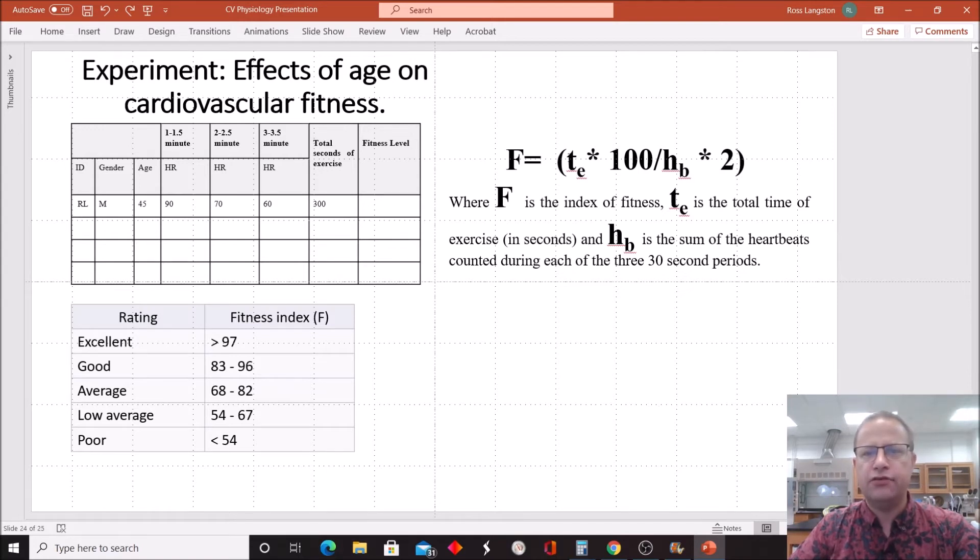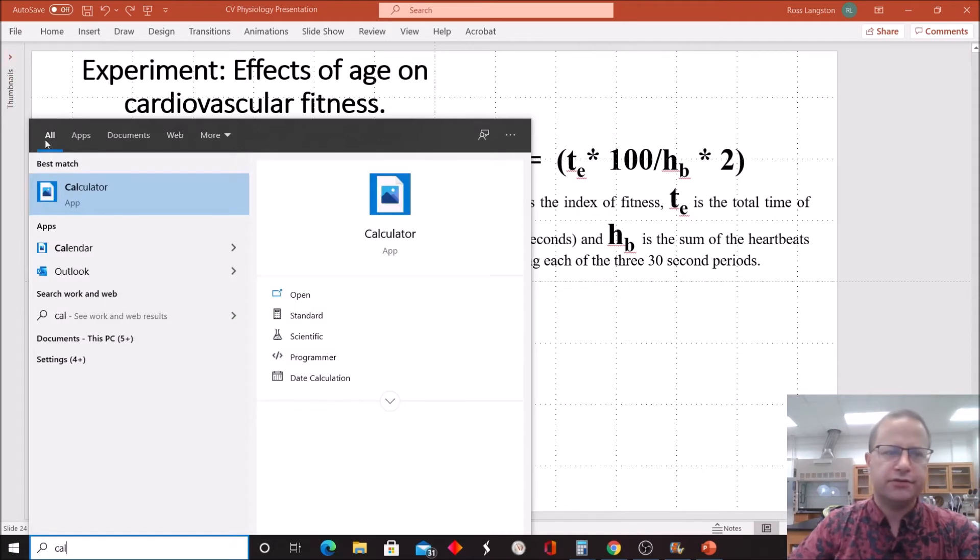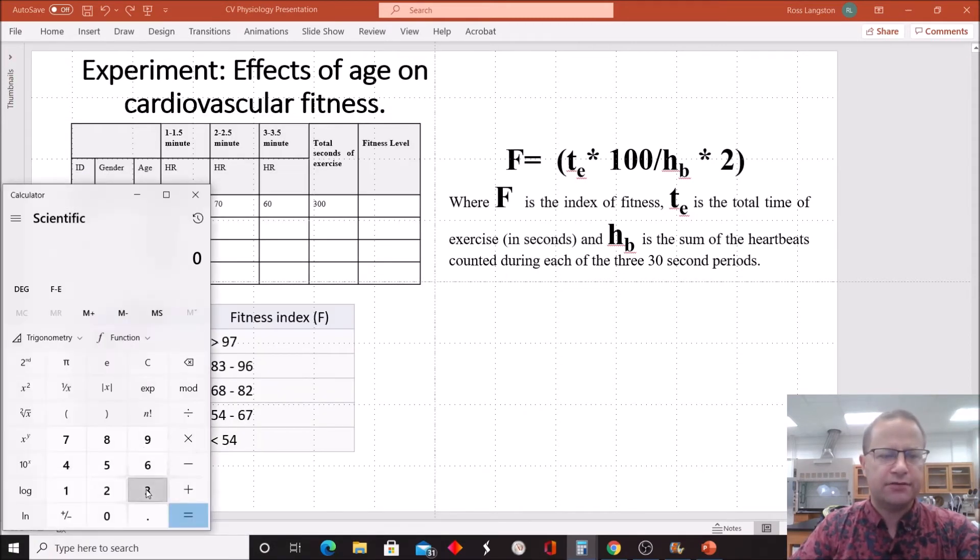So first of all, let's look at the numerator. The numerator there is fitness equals te. Well, te is the total time of exercise in seconds, and then we're going to multiply that by 100. So we said that our total time of exercise was 300, and we're going to multiply that by 100. So let's use our trusty calculator here and say 300 times 100. Should come up to be something ridiculous like 30,000. So remember, our numerator here is going to be 30,000.